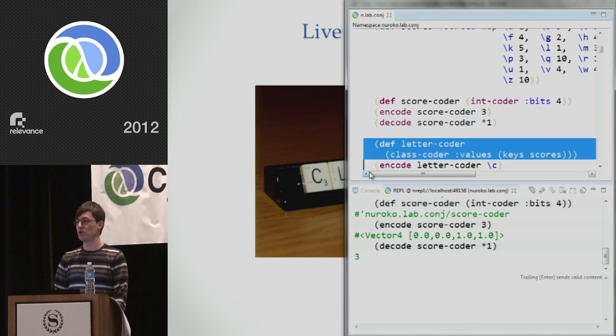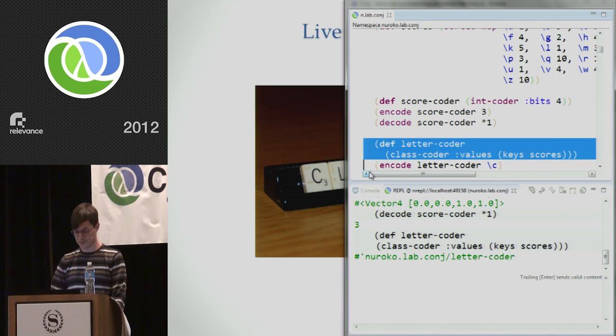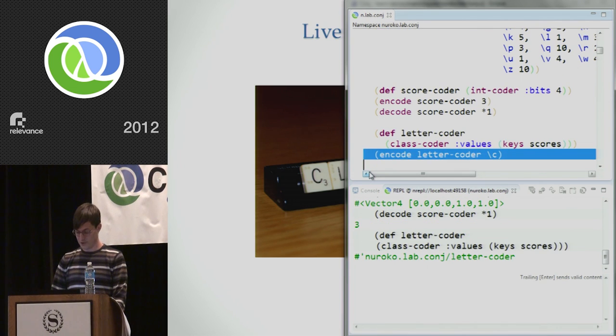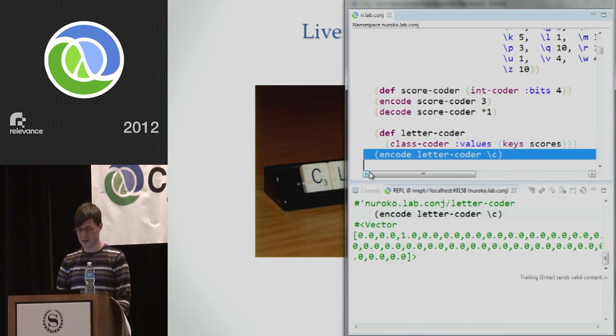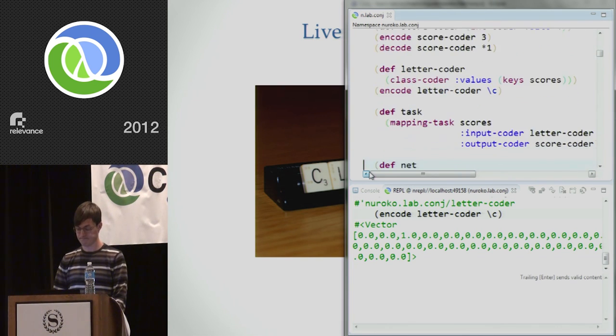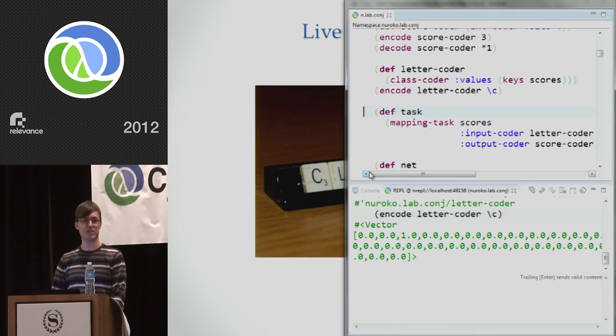I'm going to do the same thing for letters. Here we've got 26 possible classifications, so we've got 26 values. So I'm just going to use the keys from our scores map to do that. And if I encode the letter C, for example, I get a vector which is 26 elements long. And you can see that the third element only is set to 1, which represents C as the third letter of the alphabet.